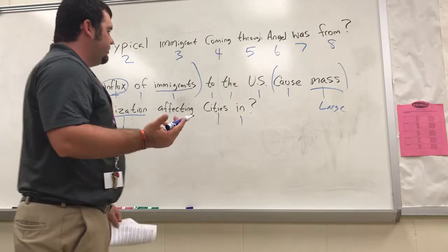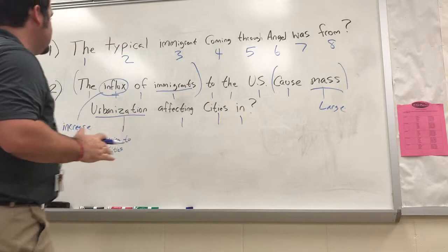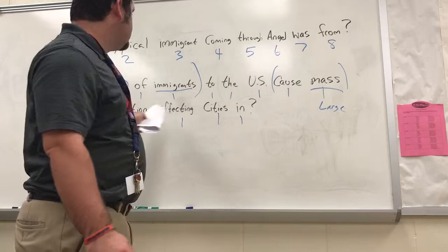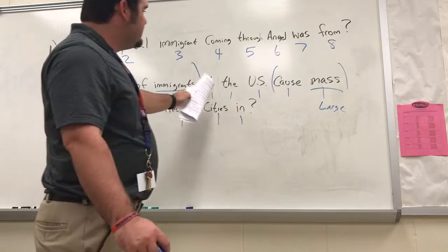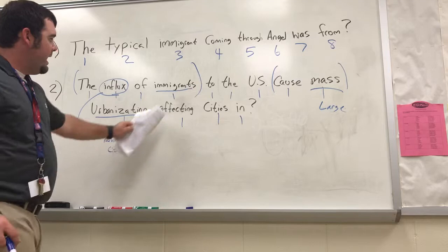'Affecting cities in what area?' — so using sentence segmentation, we break down the sentence and make it easier to understand. Instead of reading 'the influx of immigrants to the United States caused mass urbanization affecting cities in one area,' we can read it as 'the increase of immigrants to the United States caused a large amount of people moving to cities, affecting cities in which area.'